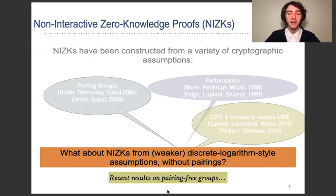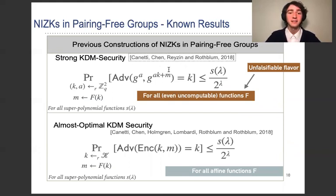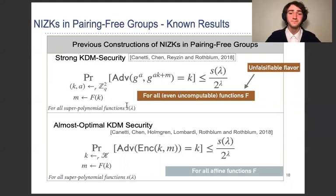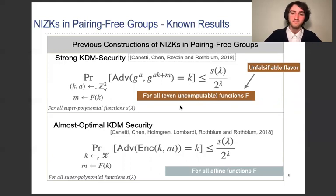A series of recent work has made progress on this. I want to mention first this paper from 2018, which constructs NIZKs based on strong KDM security. Here the adversary is given an ElGamal ciphertext that encrypts message m, where m is a function of the key. We want that the adversary recovers the key, and the advantage should be smaller or equal than s(λ) over 2^λ for all superpolynomial functions s(λ). This assumption must hold with respect to all even uncomputable functions f, so the assumption has an unfalsifiable flavor — falsifiable meant that the challenger is able to efficiently determine whether the adversary broke the assumption, and since these functions are uncomputable, the assumption has an unfalsifiable flavor.